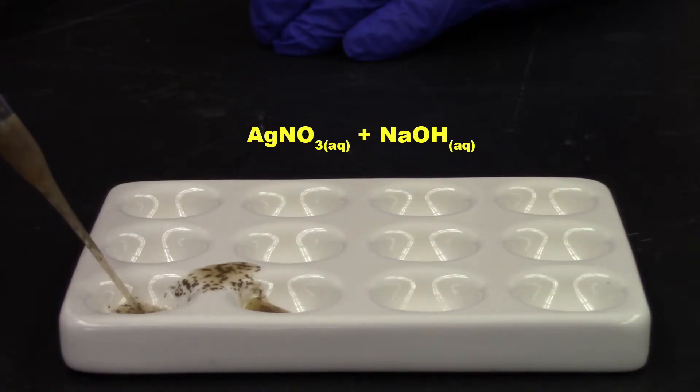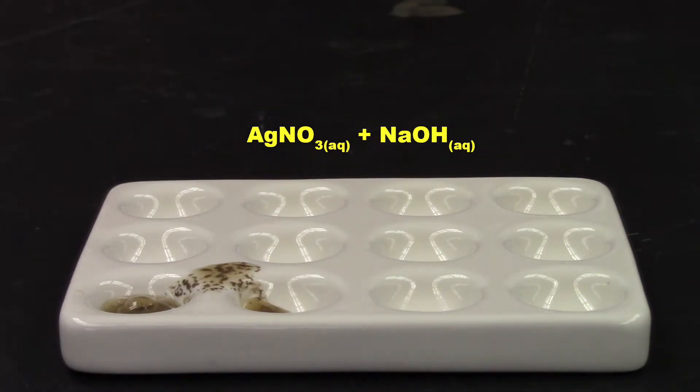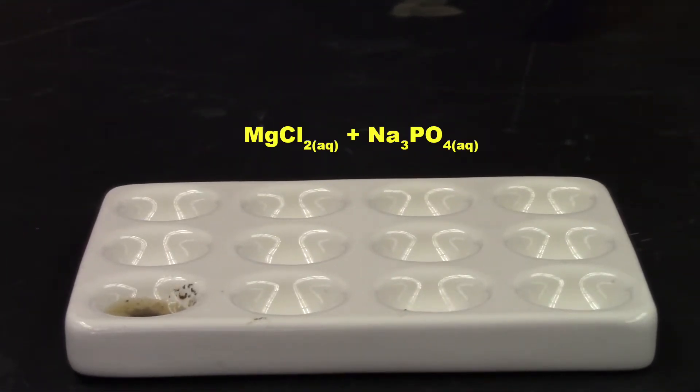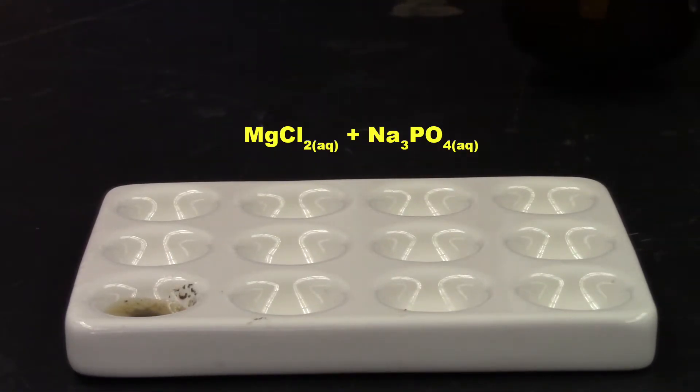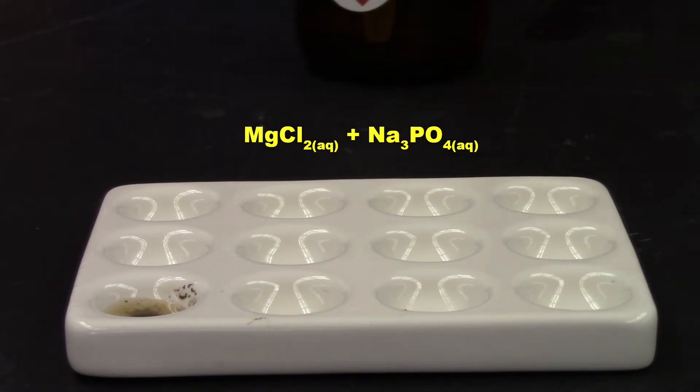So two clear, colorless reagents gave us a murky brown, solid, liquidy substance. Next up on the list. Magnesium chloride with sodium phosphate.